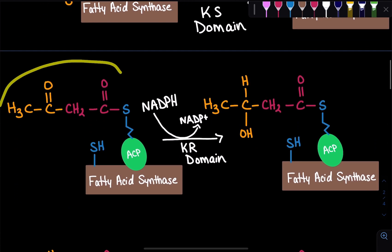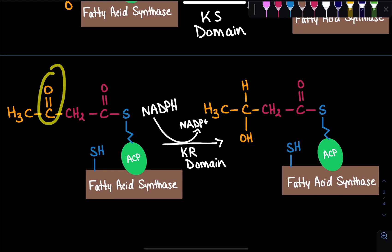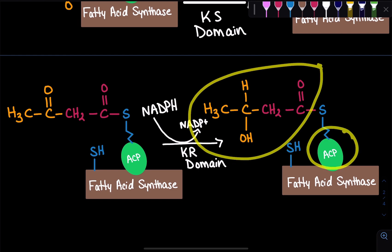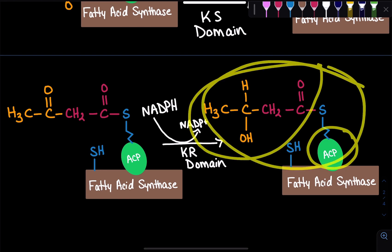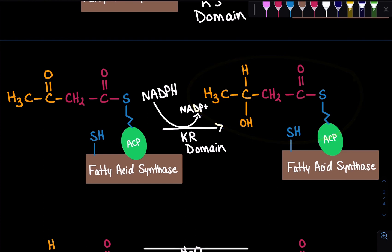Once we have ketoacyl ACP, we have to reduce it. Since this is an anabolic process, we use NADPH as the reducing agent. NADPH donates its electrons, and we reduce this double-bound oxygen. When we reduce it, we get a hydroxyl group and a hydrogen — this is called beta-hydroxyl ACP. This happens at the KR domain, the ketoacyl reductase domain, because we are reducing the ketoacyl ACP through NADPH to get beta-hydroxyl ACP.